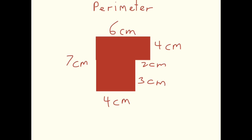Whether it's a square or a rectangle, we know how to find the perimeter and area. Now this shape here is a rectilinear shape.